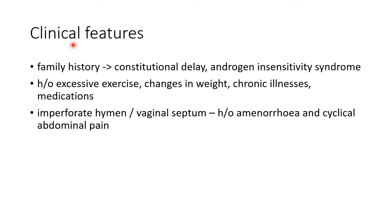Now let us see about the clinical features of primary amenorrhea. A proper family history should be taken to rule out family history of constitutional delay and androgen insensitivity syndrome. History of excessive exercise, changes in weight, chronic illnesses, and medications should be noted. In case of imperforate hymen or vaginal septum, there will be history of amenorrhea along with cyclical abdominal pain.